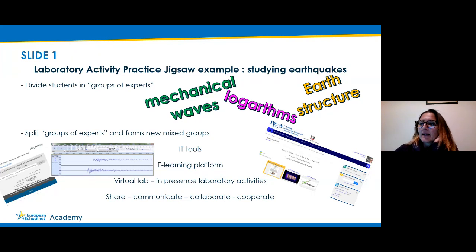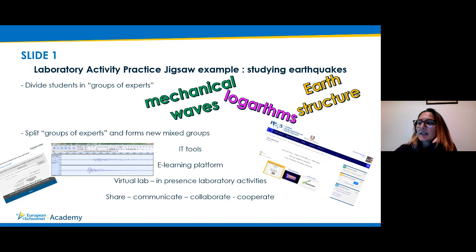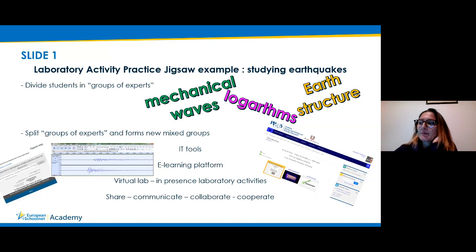In the first step, students are divided into groups of experts: a mathematicians group, a physicists group, and a geologists group. Students in the mathematicians group work on properties of logarithms, students in the physicists group work on mechanical wave propagation, and students in the geologists group work on the internal structure of the Earth.